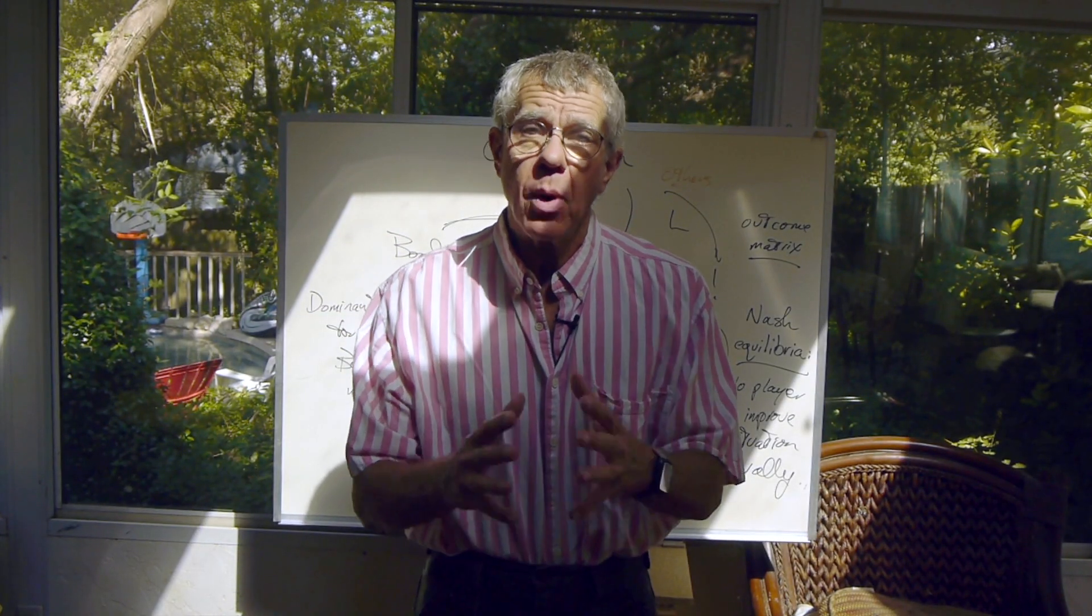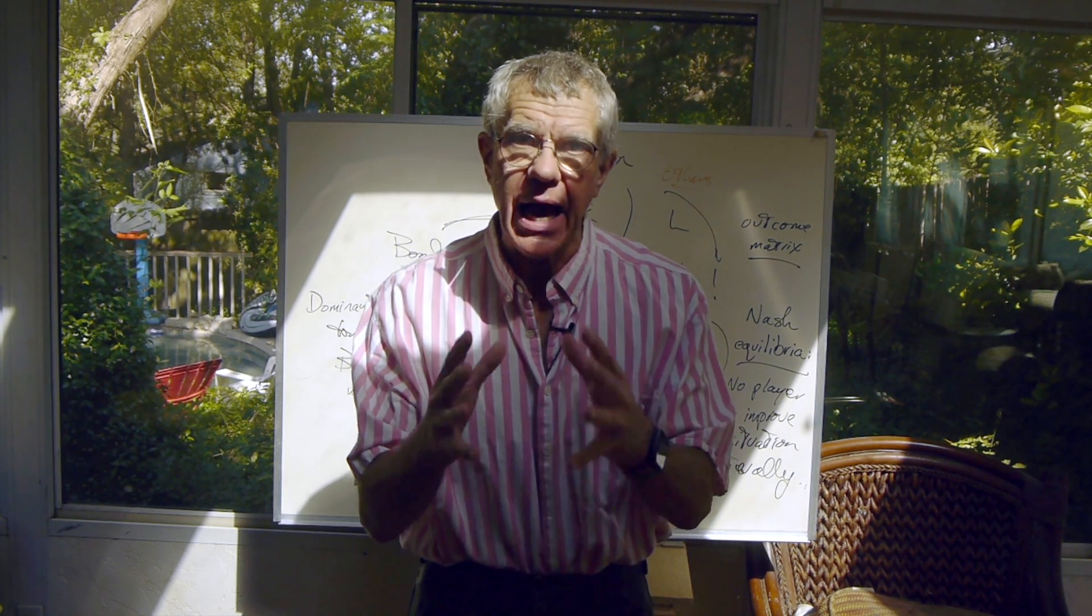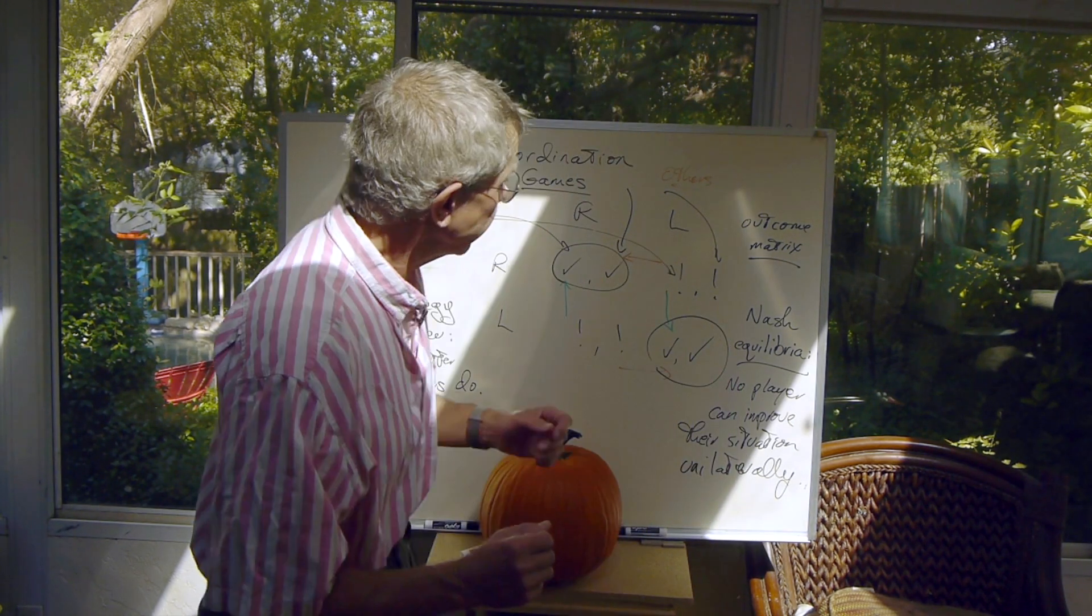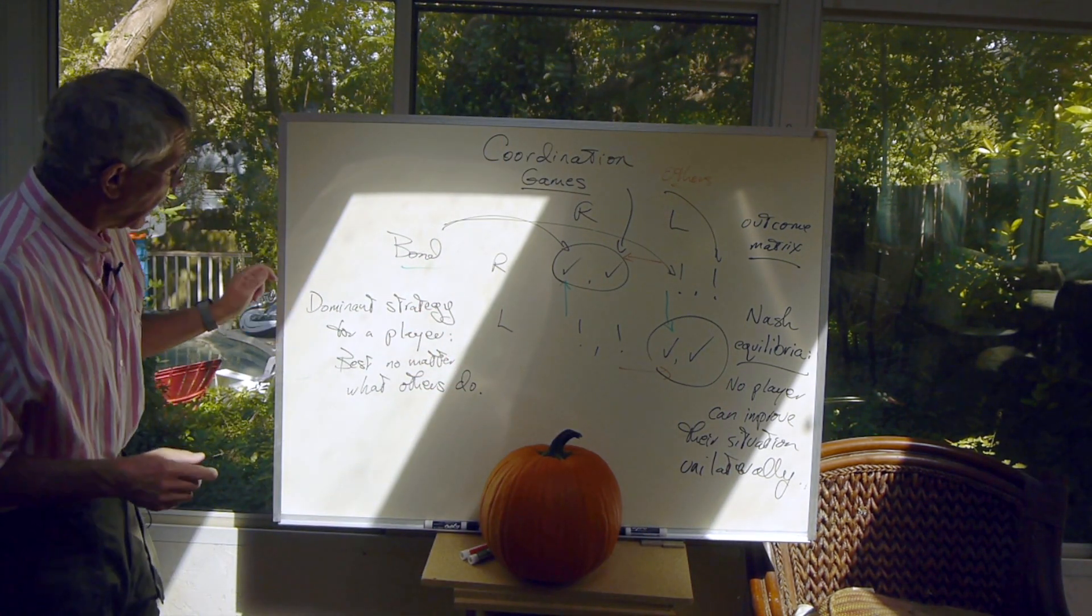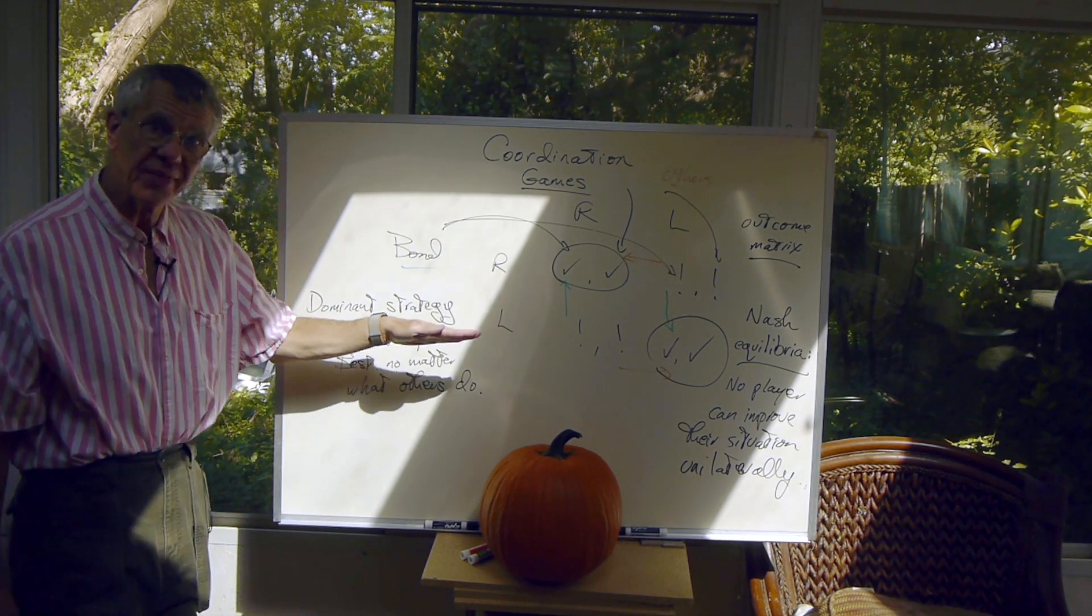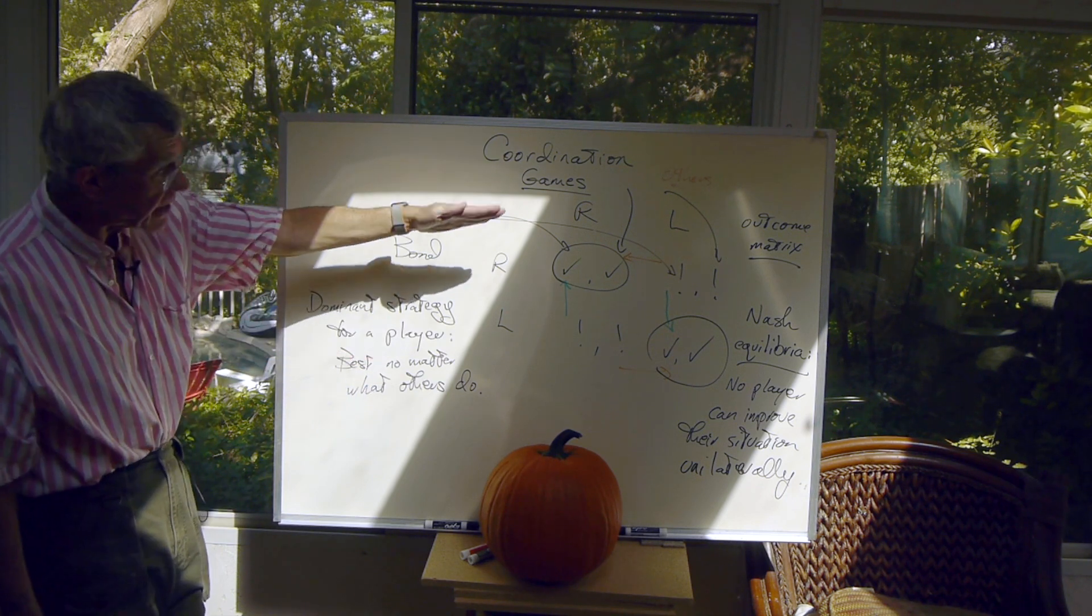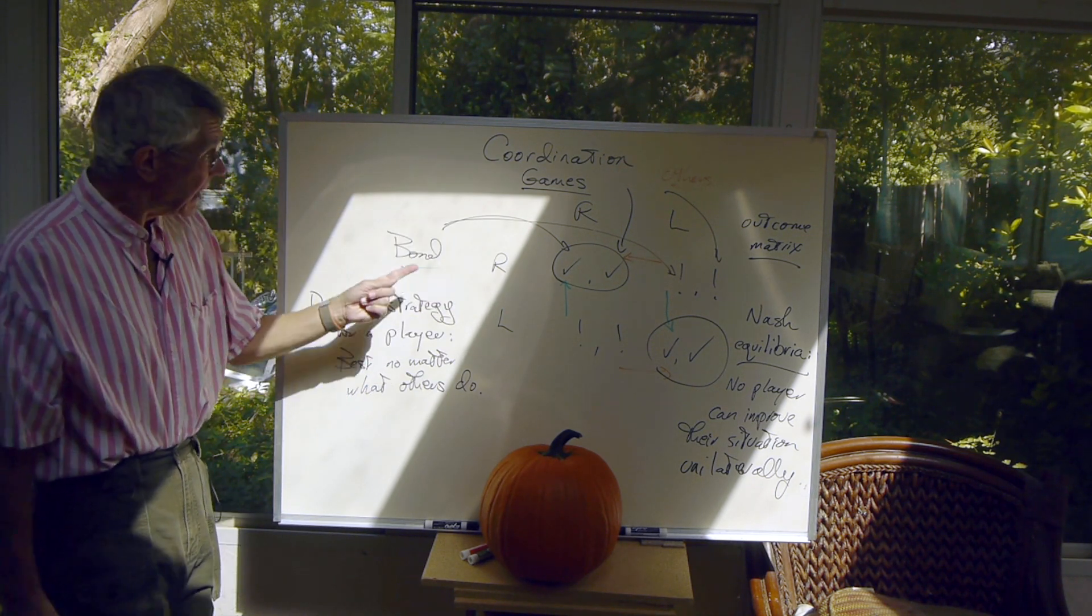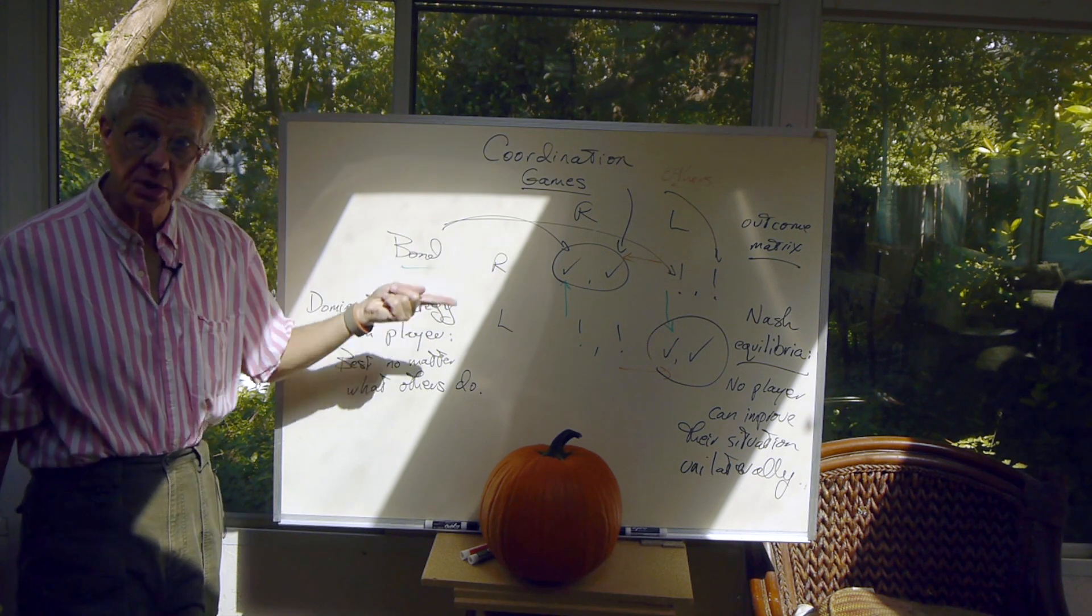Well, this game is very simple, but we've already seen a couple of the key ideas of game theory. The idea of a dominant strategy. A player has a dominant strategy in a game if that option is best no matter what the others are doing. Here, neither has a dominant strategy. What's best for each depends on what the others are doing.